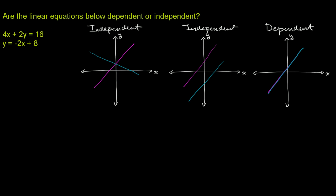In a related notion, when you look at the system as a whole and think about how many solutions it has — that's a different consideration from whether the equations are independent or dependent. When you think about the system, you think about how many solutions it has.